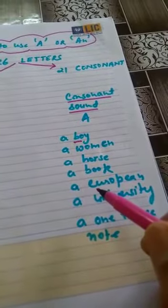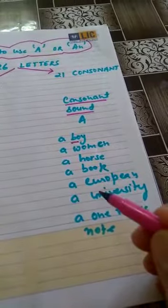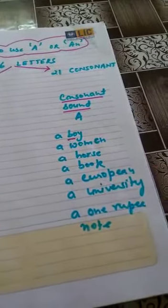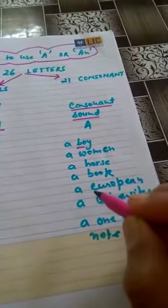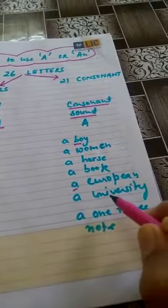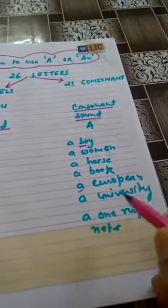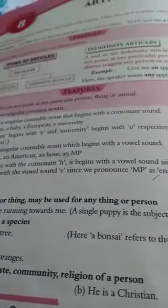There are some words which start with a vowel but produce the sound of a consonant. That's why we use the article A with them — like 'European,' 'university,' and 'a one rupee note.' You have to remember these words starting with a vowel but producing a consonant sound, which is why we use article A with them.